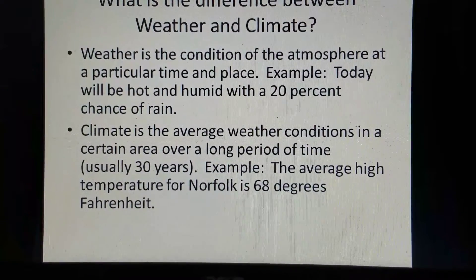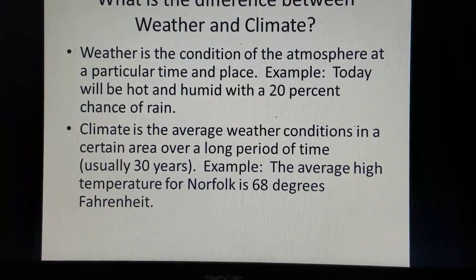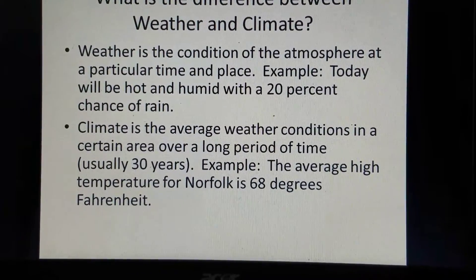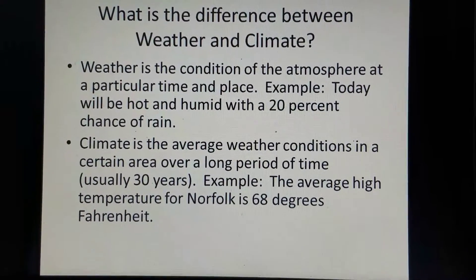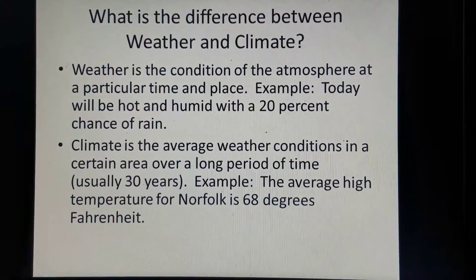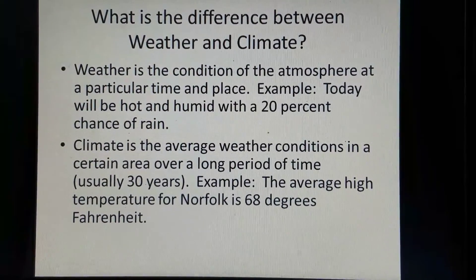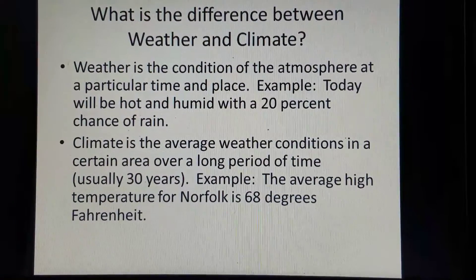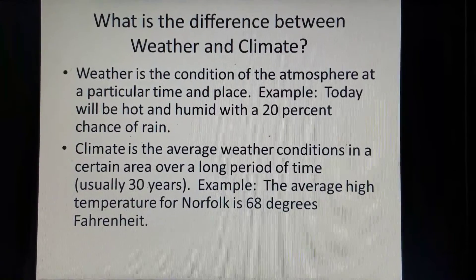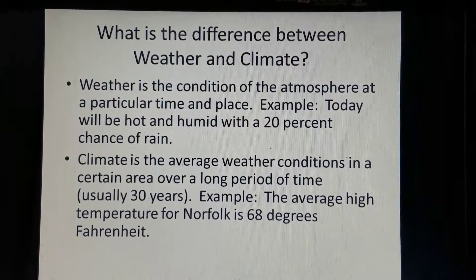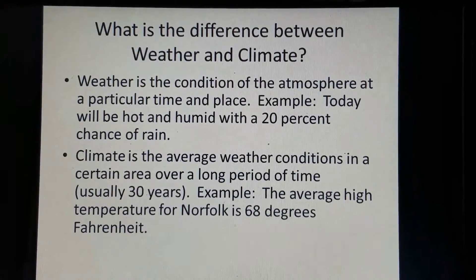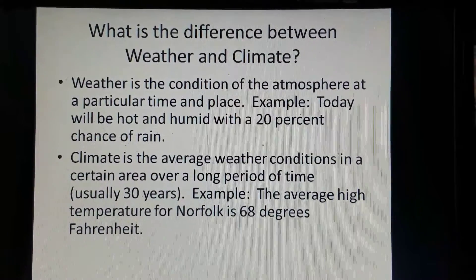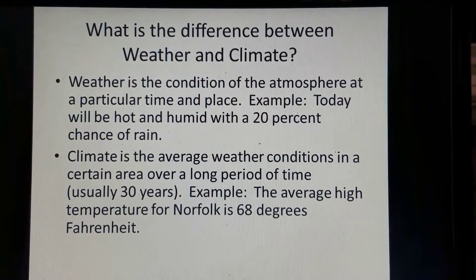Whereas climate is the average weather conditions in a certain area over a longer period of time. Typically, what scientists look at is 30 years as the data sample set. An example of a climate statement would be the average high temperature for Norfolk, Virginia, is 68 degrees Fahrenheit for a certain time of the year or for a certain day of the year.